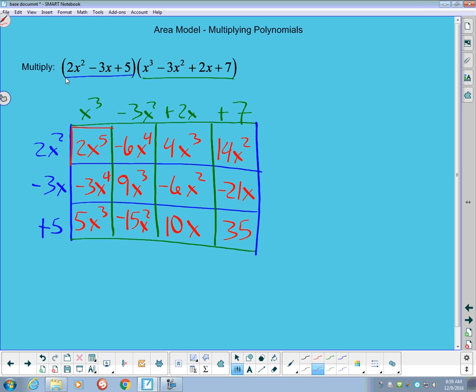My first diagonal coming through here gives me 2x⁵. On my next diagonal, those are both x⁴—they're like terms—and when I add those together I get -9x⁴. These three together here look like 18x³.